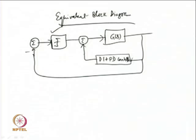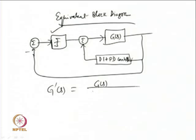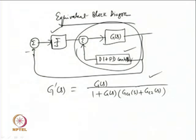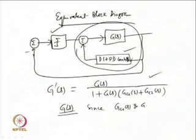This is what the relay sees during the relay test. The relay is subjected to a modified process given by G'(s) = G(s) / [1 + G(s)·(Gc1(s) + Gc2(s))]. Identification is carried out for this modified process, from which it is possible to estimate the parameters of the transfer function model for G(s), since we know Gc1(s) and Gc2(s).